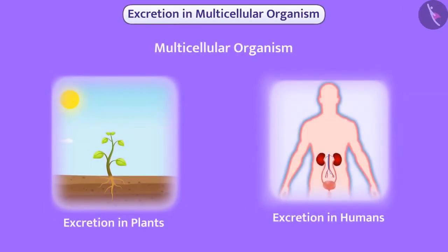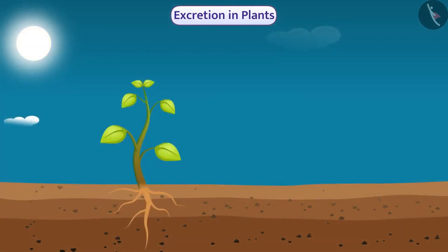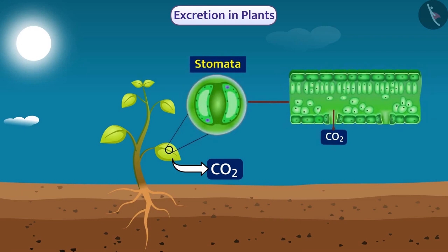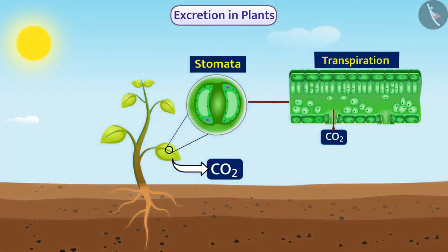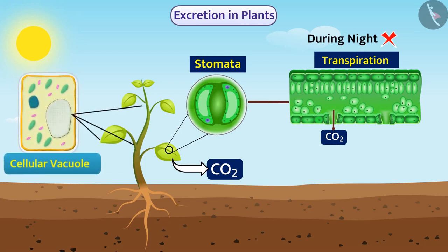Multicellular organisms have specific organs for excretion. In plants, during photosynthesis, waste materials — oxygen and water — are produced. At night, when there is no photosynthesis, carbon dioxide is produced as a waste product. These products are removed through stomata present in the leaves. In the process of transpiration, excess water is also removed by stomata. Some waste products are stored in the cellular vacuoles of the bark of leaves and twigs, which then get detached from the plant.